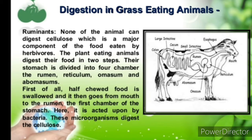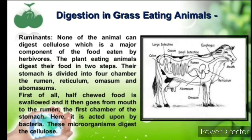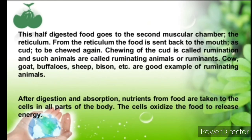None of the animal can digest cellulose, which is the major component of the food eaten by herbivores. Plant-eating animals digest their food in two steps. The stomach is divided into four chambers: the rumen, reticulum, omasum, and abomasum. First, half-chewed food is swallowed and goes from the mouth into the rumen, the first chamber of the stomach, where it is acted upon by bacteria and these microorganisms digest cellulose.